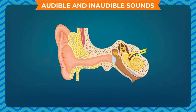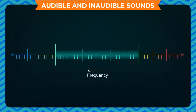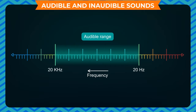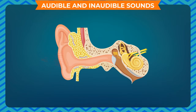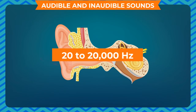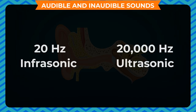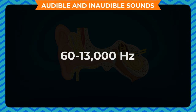Audible and inaudible sounds. Sounds of frequencies less than about 20 vibrations per second cannot be detected by the human ear — such sounds are called inaudible. Sounds of frequencies higher than about 20,000 vibrations per second are also not audible to humans. The audible range for humans is roughly 20 to 20,000 Hz. Sounds below 20 Hz are called infrasonic, and those above 20,000 Hz are called ultrasonic. Though we can hear between 20 to 20,000 Hz, we can produce sounds within a range of only 60 to 13,000 Hz.